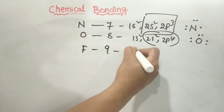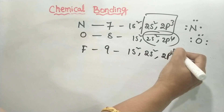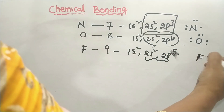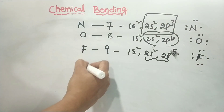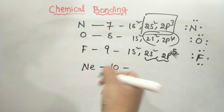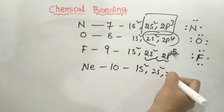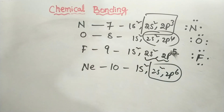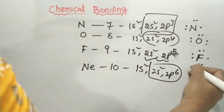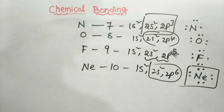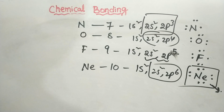Next, fluorine, atomic number 9: 1s2, 2s2, 2p5. The outer shell has 7 valence electrons: 1, 2, 3, 4, 5, 6, 7. Next, neon has 8 valence electrons — the outer shell is totally filled. Neon is a noble gas and a highly stable element.